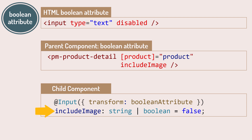Notice the input property declaration. As of this recording, for the Angular compiler to work correctly, the type of the input property must be string or boolean. That's because Angular interprets all static attributes such as our include image attribute as a string — so the incoming value is a string — and with the booleanAttribute transform function, that string is transformed to a boolean.